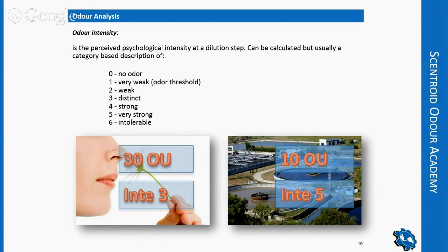Odor intensity is another parameter, perhaps less widely used and mostly used in the U.S. It describes how the odor is perceived by panelists. In our example, the flower at 30 odor units has an intensity of about three. The wastewater treatment plant at 10 odor units — three times less concentration — but the odor intensity might be set to five, because an offensive odor gets a higher intensity than a pleasant one. A five would be very strong or intolerable at 10 odor units for a wastewater treatment plant, but for a flower to become intolerable, it will need to be in the hundreds of odor units.